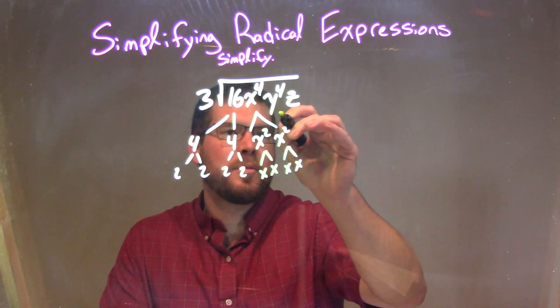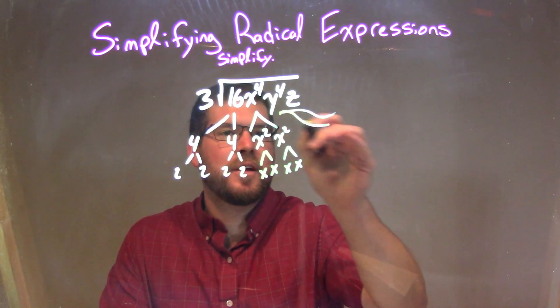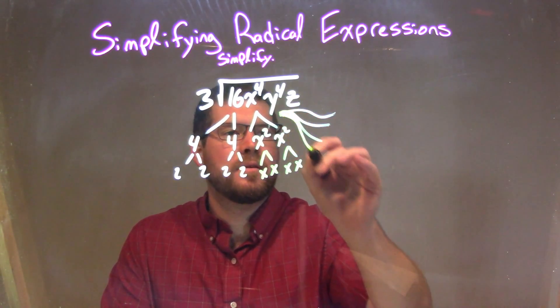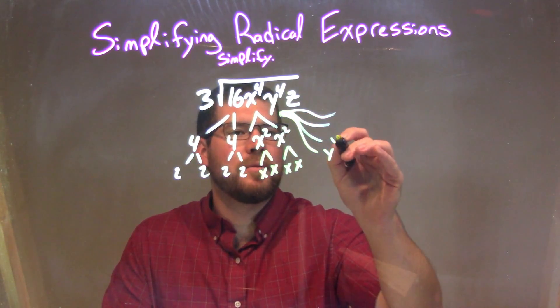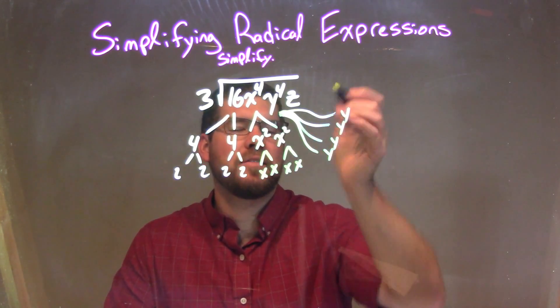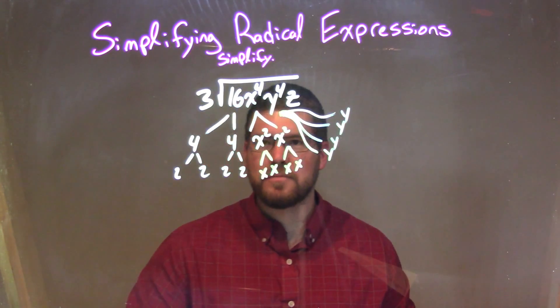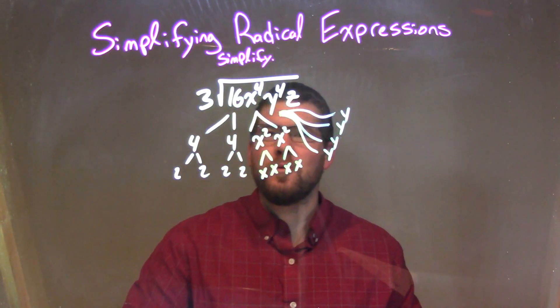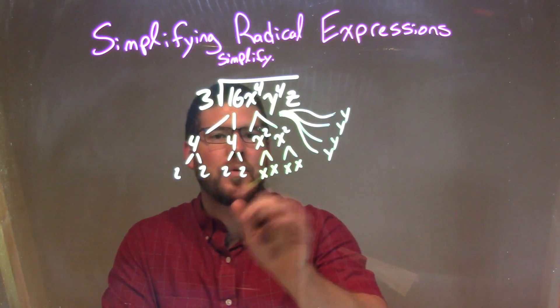Same thing with y to the 4th, but I'll do it individually like this: y times y times y times y. And z is just by itself. We've got a lot of things we broke down here.